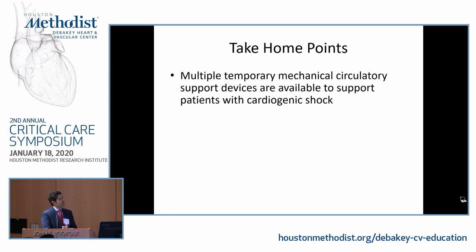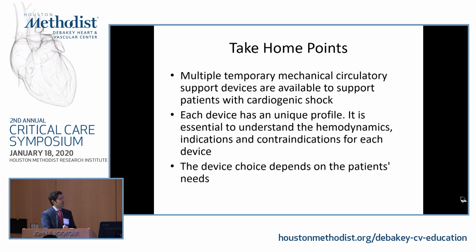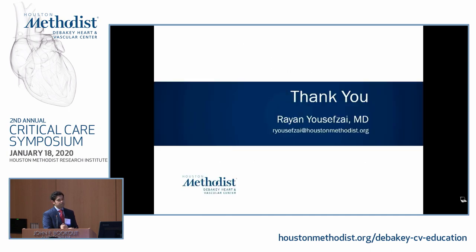Take-home points: there are multiple temporary mechanical circulatory support devices available for patients with cardiogenic shock. Each device has a unique hemodynamic profile, and it is essential to understand the hemodynamics, indications, and contraindications of each. Device choice depends on the patient's needs — whether they require left ventricular support, right ventricular support, biventricular support, or oxygenation.